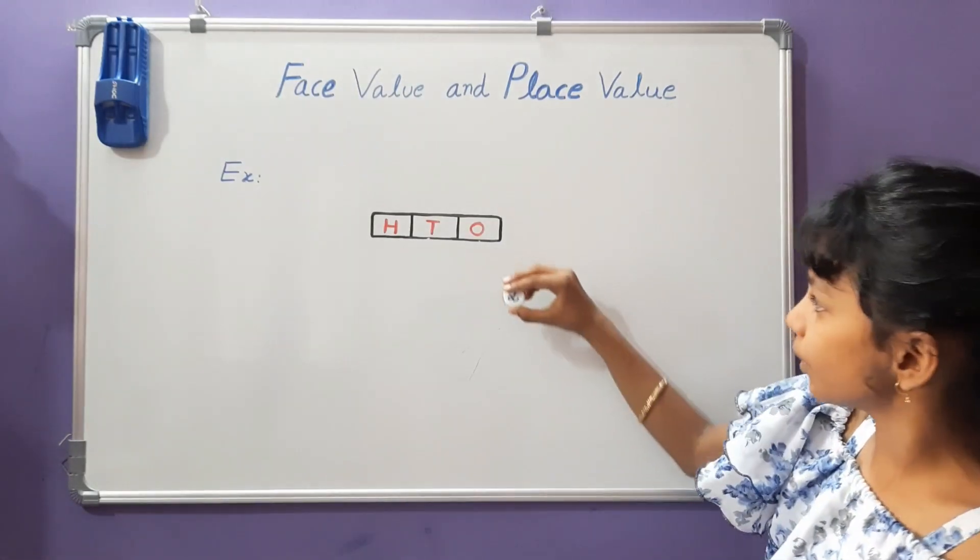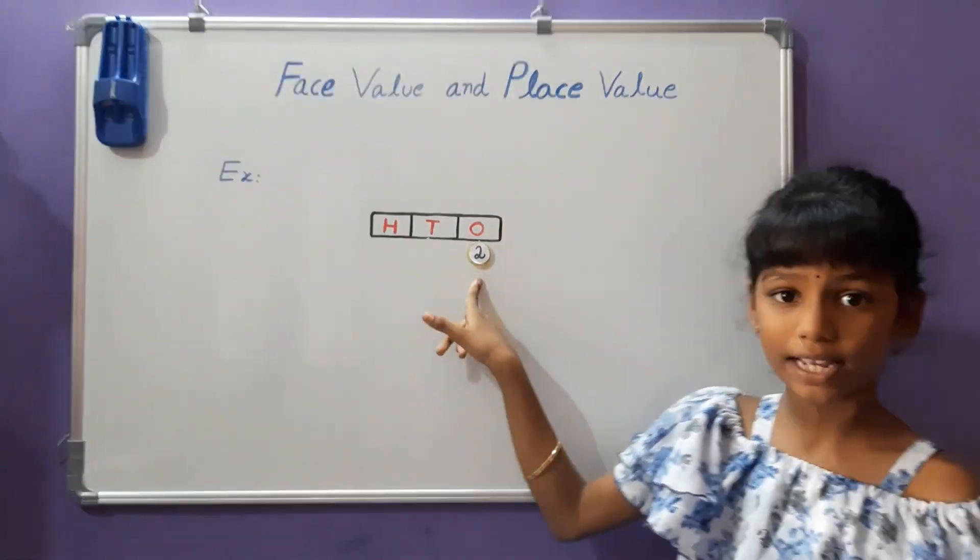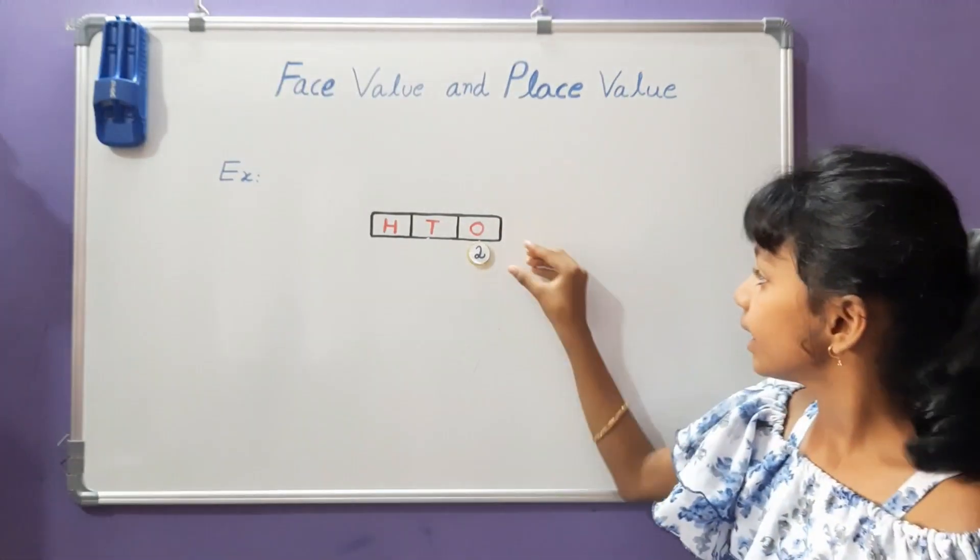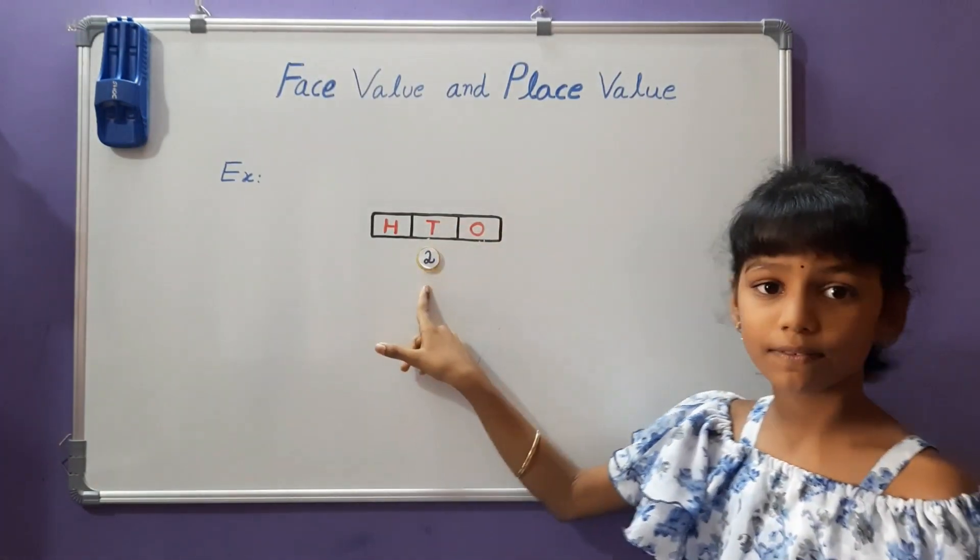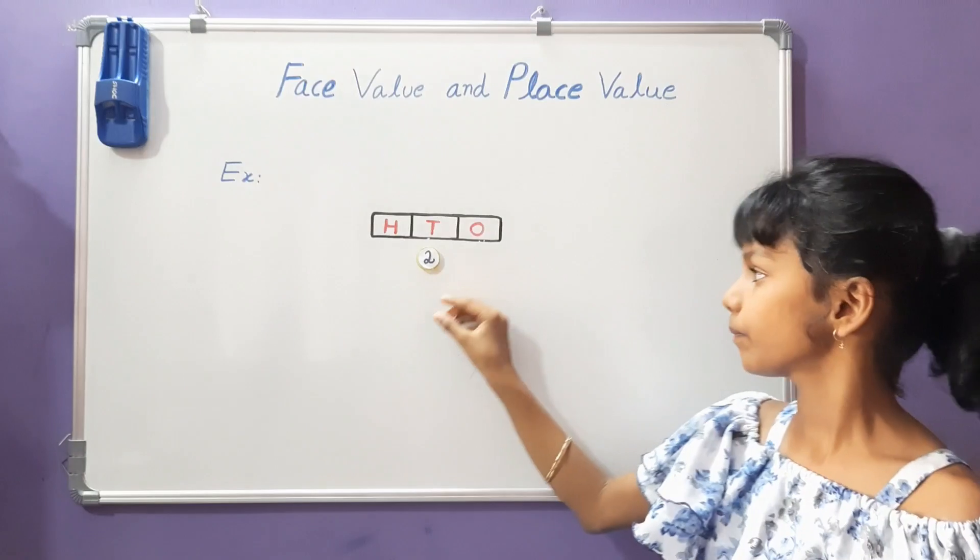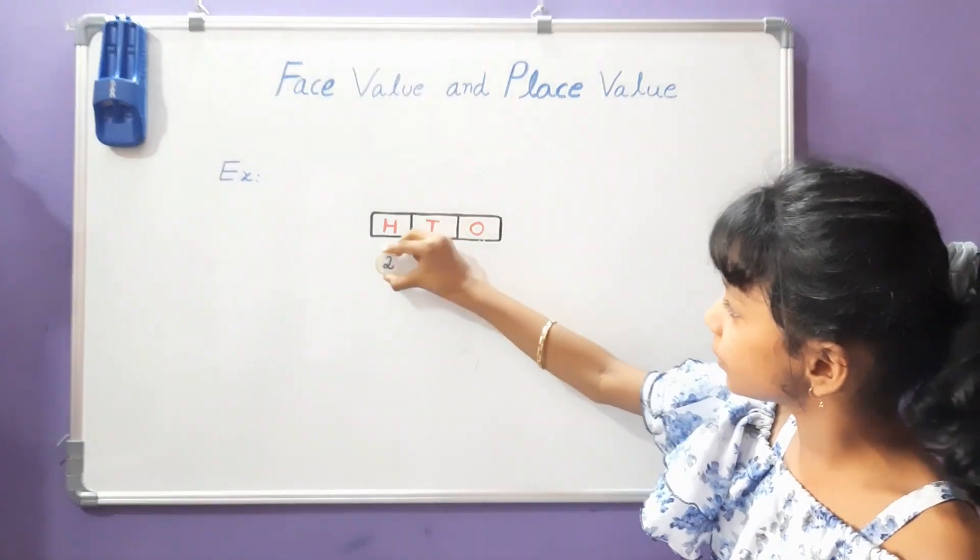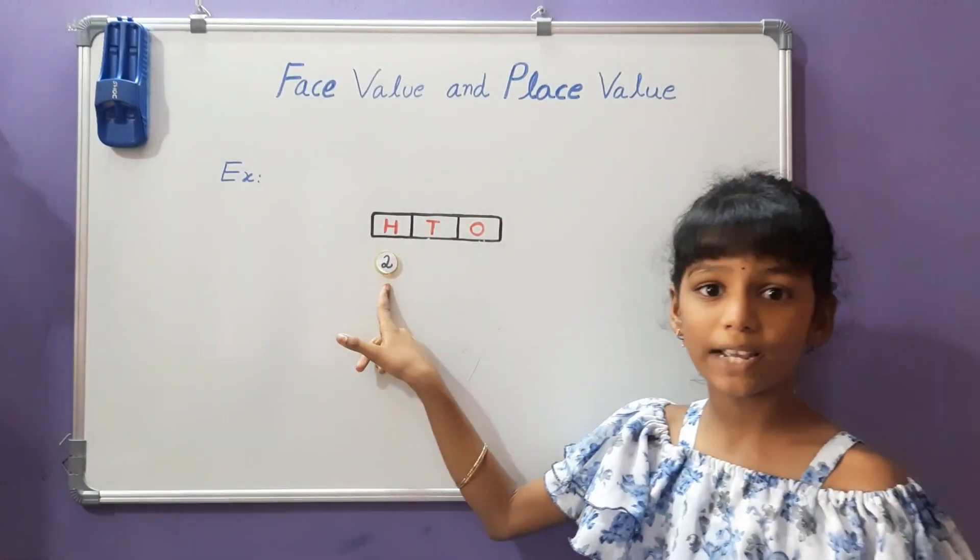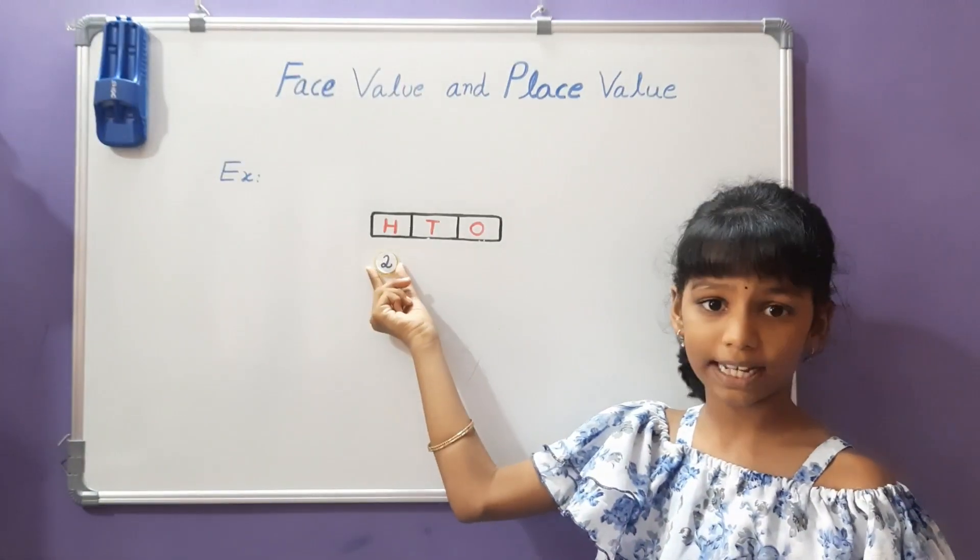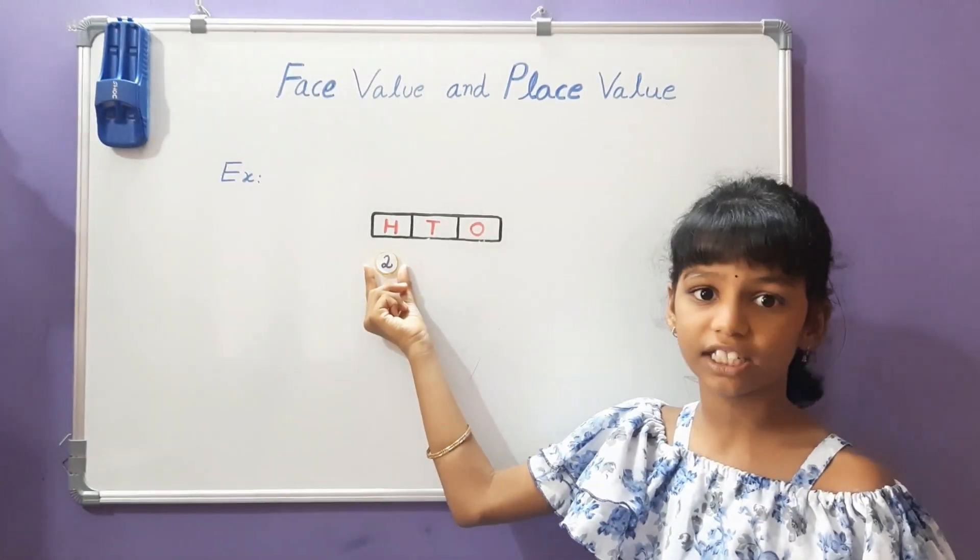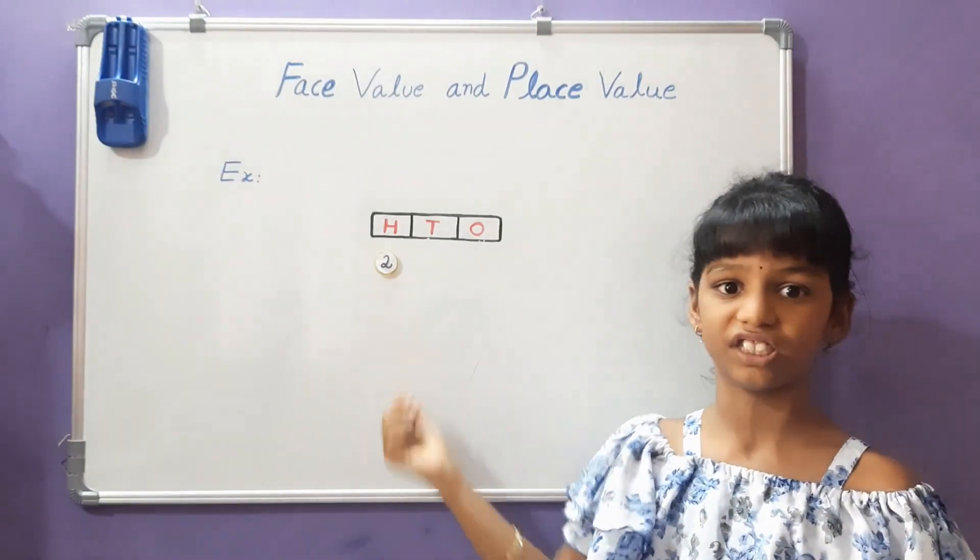If you keep digit 2 at 1's place, the face value is 2. If you keep digit 2 at 10's place, the face value is 2 only. If you keep digit 2 at 100's place, the face value is same, 2 only. So, the face value never changes as the place changes.